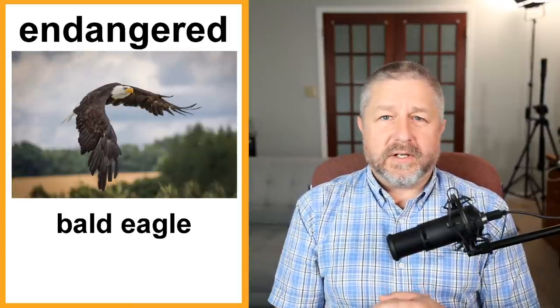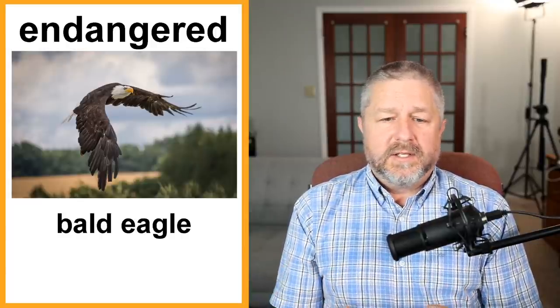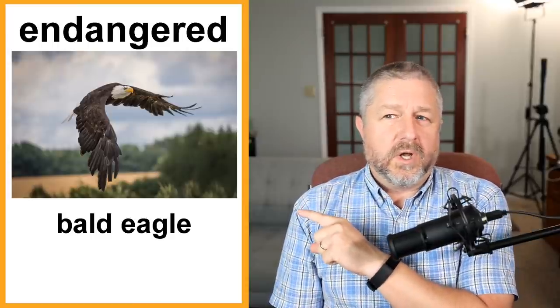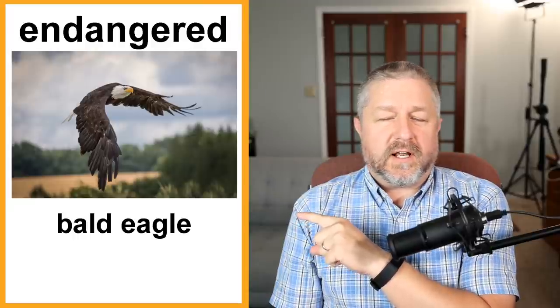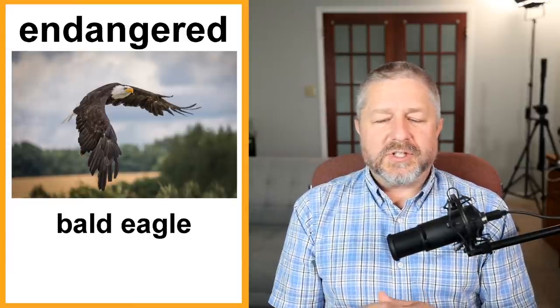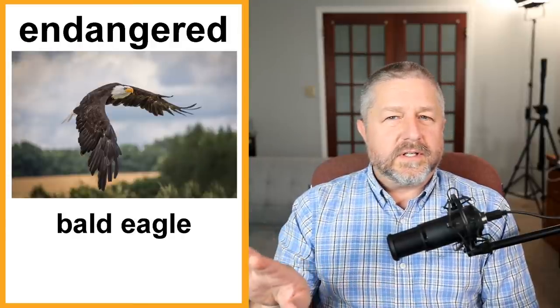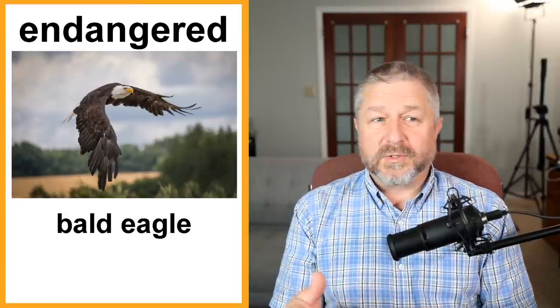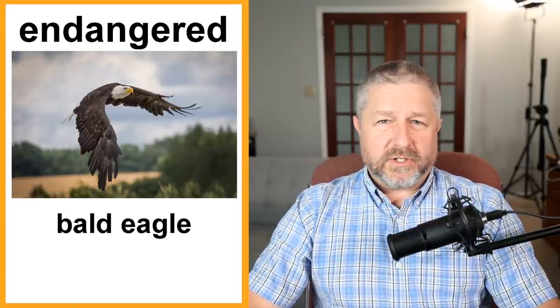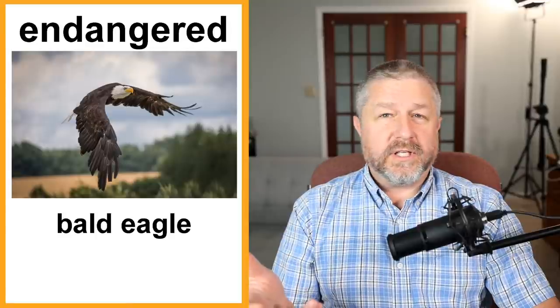We also have animals that are endangered. An endangered animal is one that may eventually not exist. The bald eagle was endangered — when I was doing research for this lesson I found out it's no longer on the endangered species list. There's actually a bald eagle that lives on my farm. I thought they only lived in parts of the United States, but we've seen one here on multiple occasions. It's a beautiful, beautiful bird. It was at risk of going extinct, but now it is no longer endangered — that's really cool.